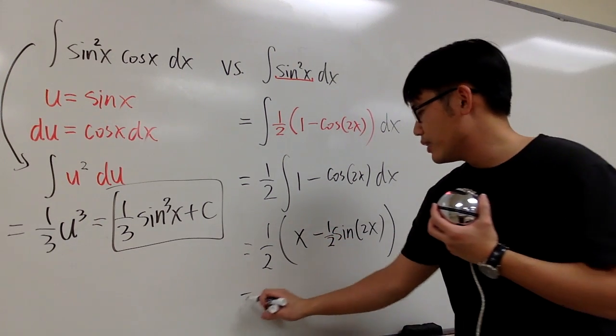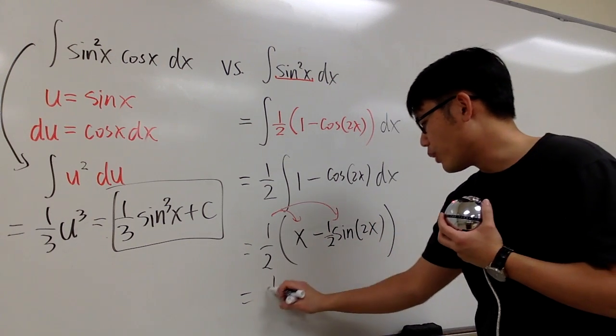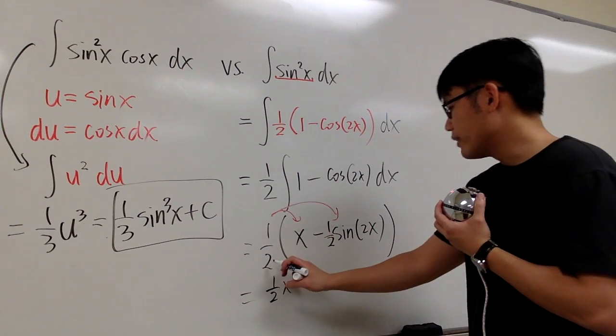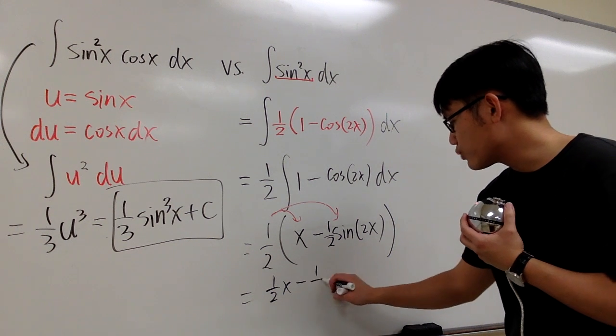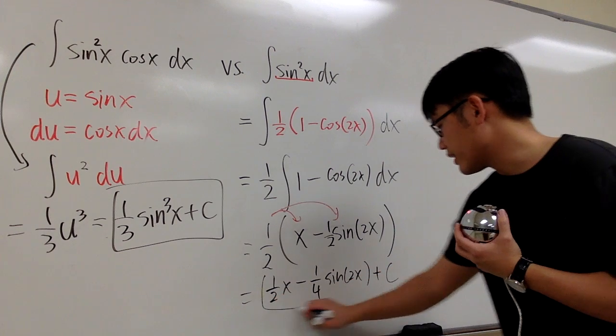If you would like, you can take the 1 half and distribute it into the parentheses. And I'll do that. That will be 1 over 2x. 1 half times negative 1 half. That's minus 1 fourth sine of 2x. And then we are done.